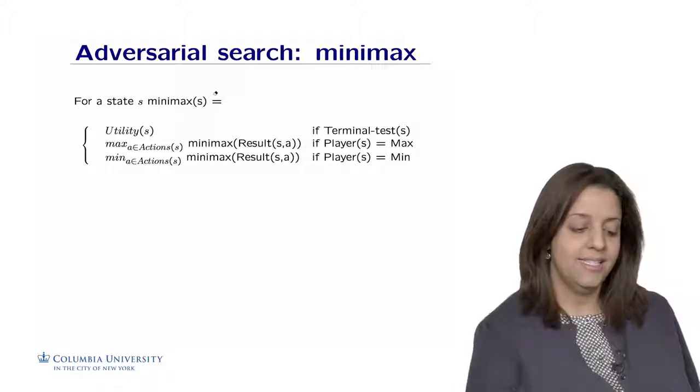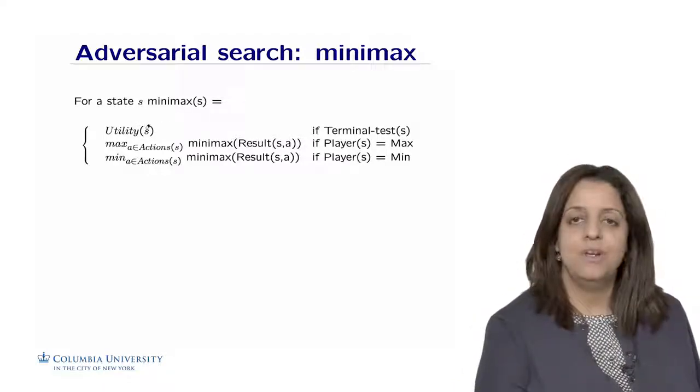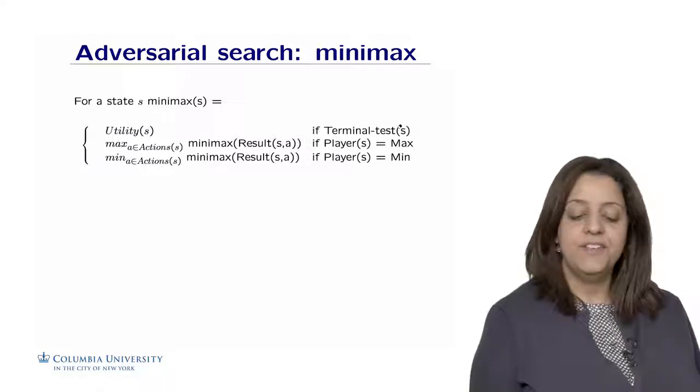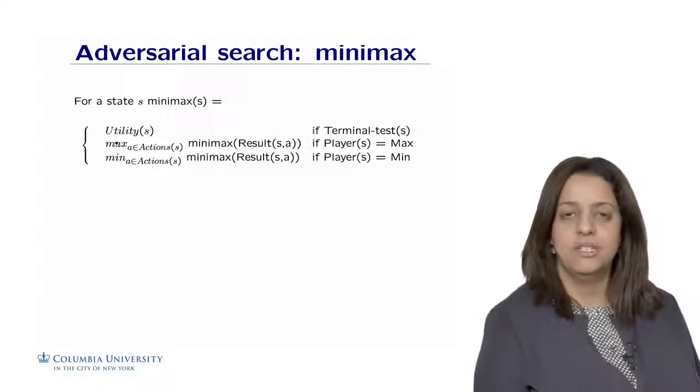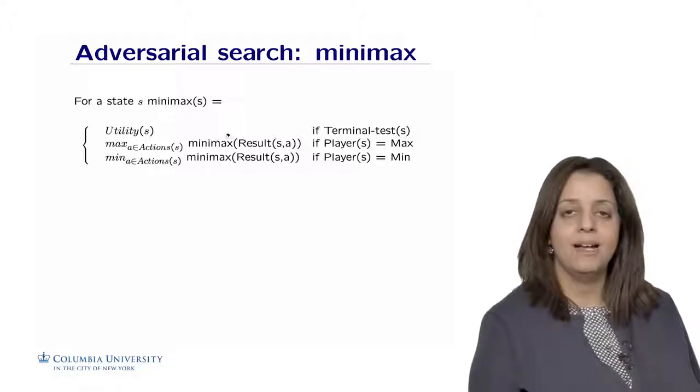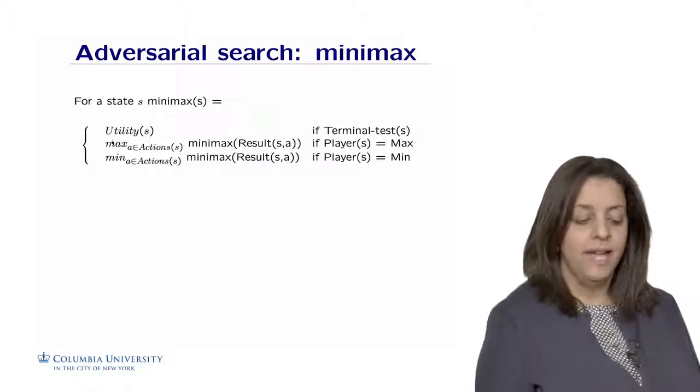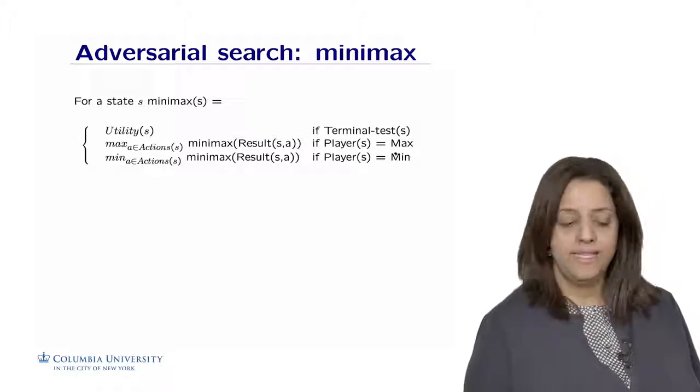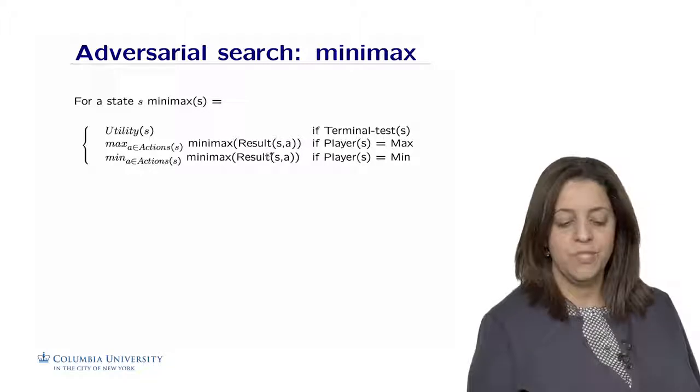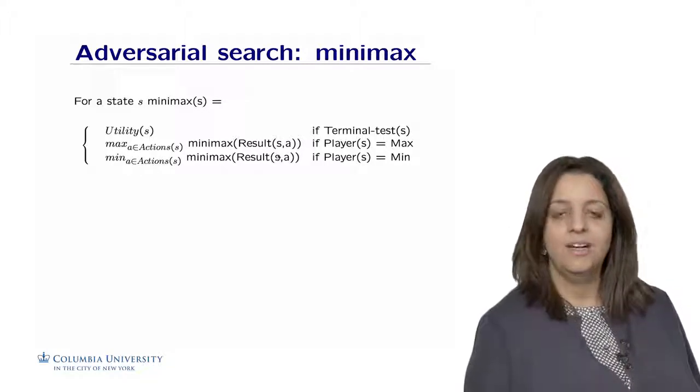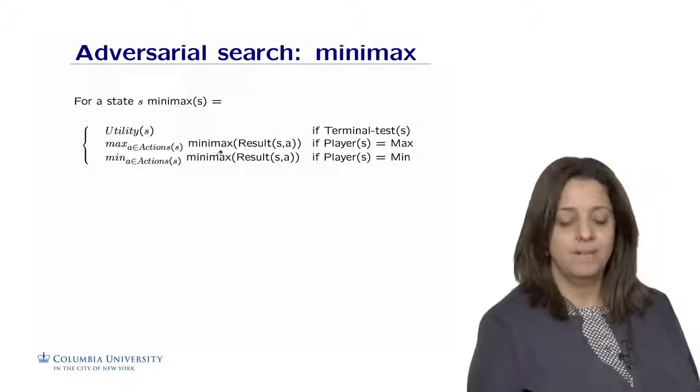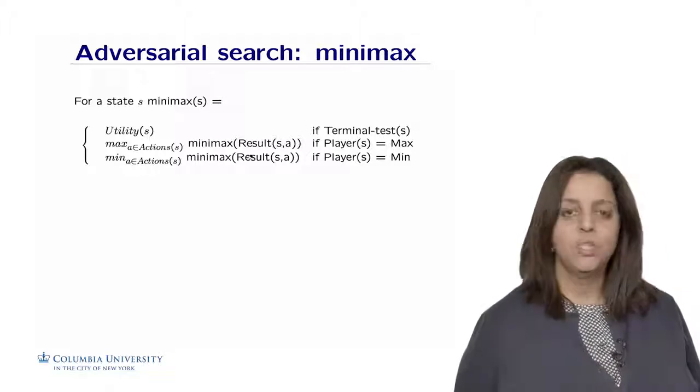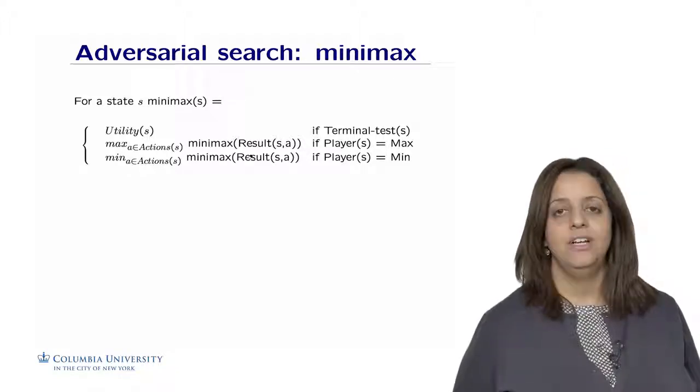The minimax of state s is the utility of s if the terminal test is true. If Max is playing, we maximize all children's values, calling minimax recursively with the result of applying action a for state s over all actions, taking the maximum. If the player is Min, we call minimax recursively with all actions on s, taking the minimum. It's a simple recursive algorithm finding the minimum over the path for Min and maximum for Max.